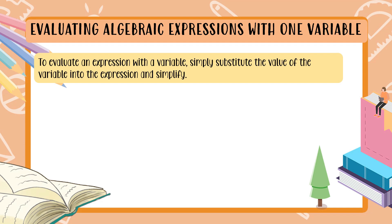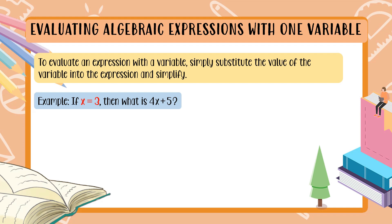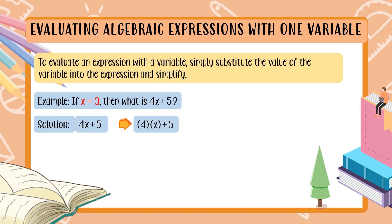How do we do that substituting? Let's have an example. If x is equal to 3, then what is 4x plus 5? The solution: 4x plus 5 is also 4 times x plus 5. Our variable x has a given value — x is equal to 3. So what we do is substitute 3 in place of x. We replace x with 3. Now we can solve.